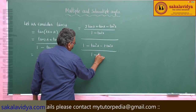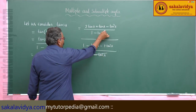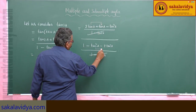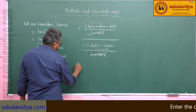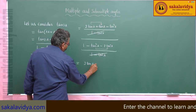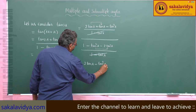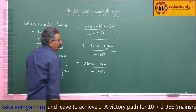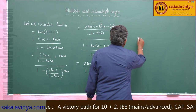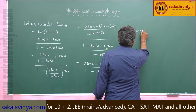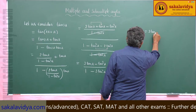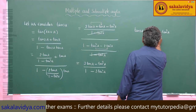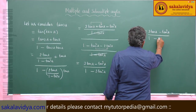The denominator, also with LCM (1 - tan²a), becomes 1 - tan²a - 2tan²a. The (1 - tan²a) factors cancel from numerator and denominator. After simplifying both expressions, we get 3tan(a) - tan³(a) in the numerator and 1 - 3tan²(a) in the denominator.